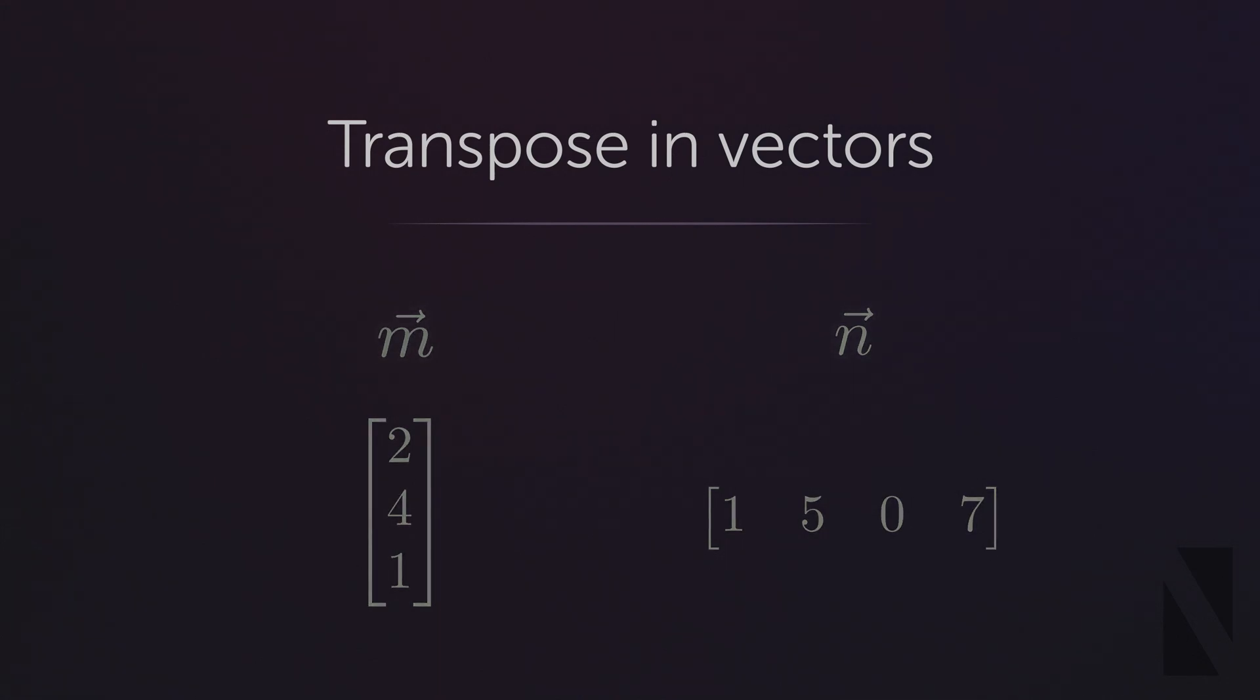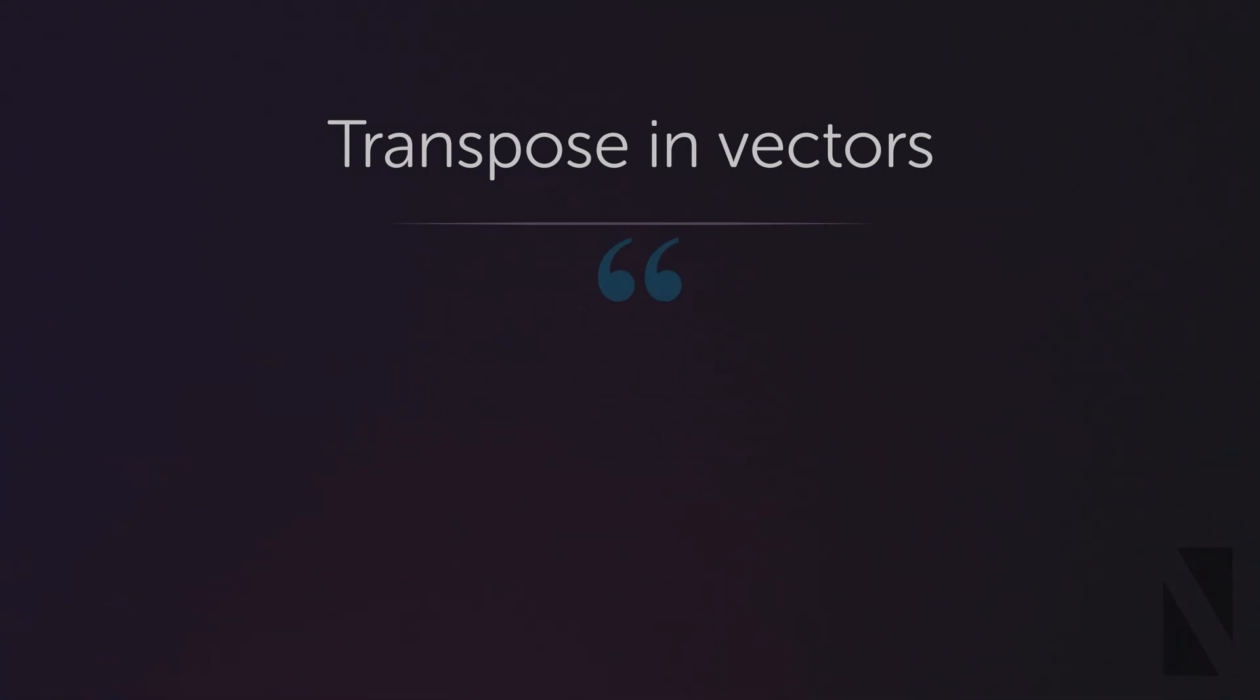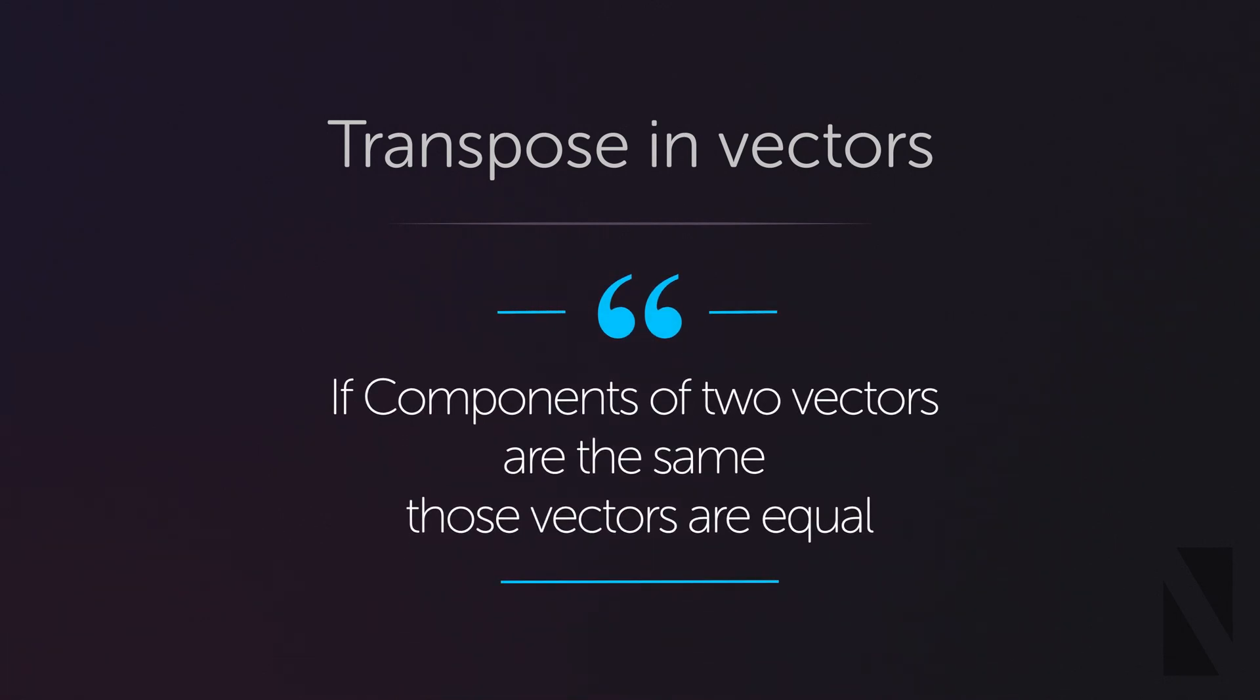But why does transpose matter at all? Didn't we say before that there is no difference between row orientation and column orientation in vectors? As we said before in pure math if components of two vectors are the same those vectors are considered equal.